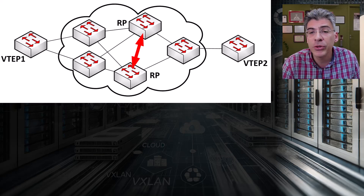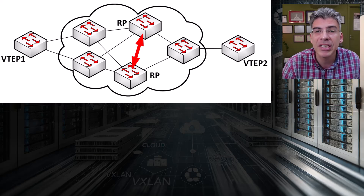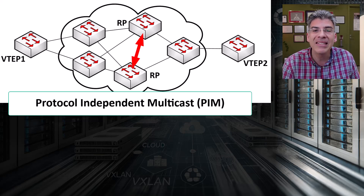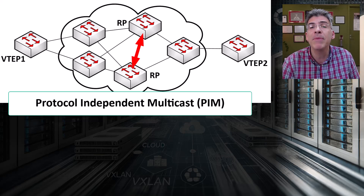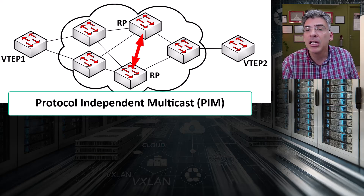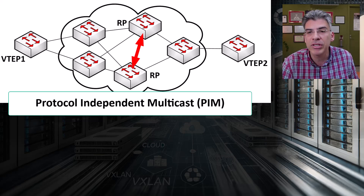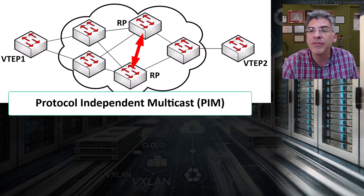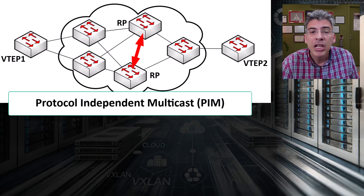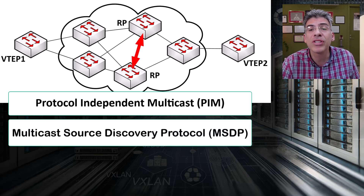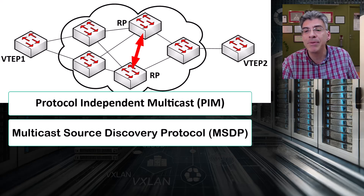There are a couple of ways to achieve this synchronization. One is to use PIM itself — the RPs can be configured to exchange PIM messages between all spine switches configured as RPs, so that they can all learn about the multicast sources and all the multicast receivers. Alternatively, you can use what is known as Multicast Source Discovery Protocol, or MSDP.